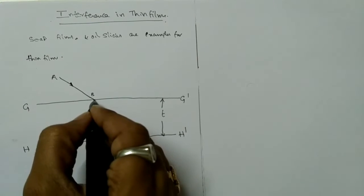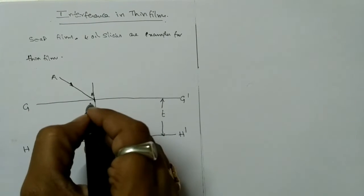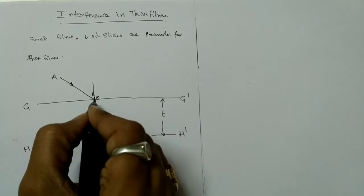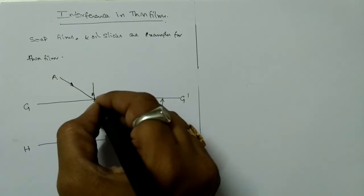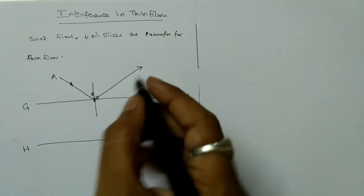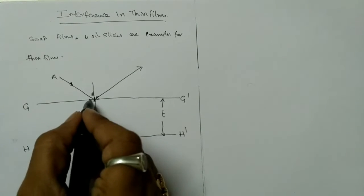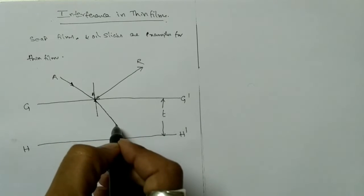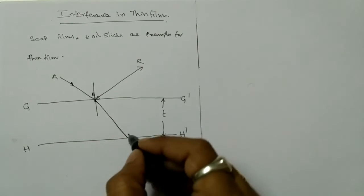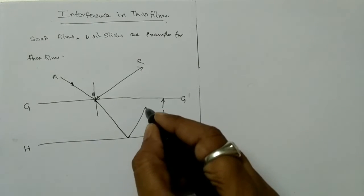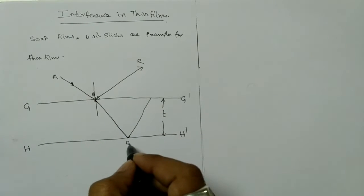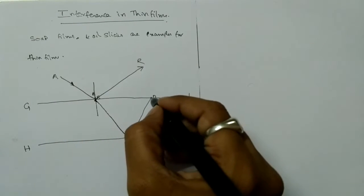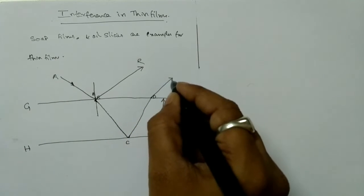Whenever a monochromatic light ray AB is incident on the upper surface of the thin film, a ray immediately reflects from the upper surface itself. Another ray enters into the thin film, touches the lower surface at point C, reflects, then touches the upper surface at point D, and then due to refraction it bends and follows a new path.